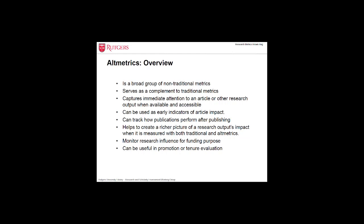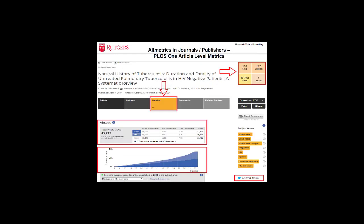Coupled with these developments are the emergence of several altmetrics tracking tools. As mentioned earlier, altmetrics are alternative — they are not replacing the traditional metrics. Together with traditional bibliometrics, altmetrics help to provide a richer picture of an article or other research output's impact. Compared to traditional metrics, altmetrics capture immediate attention to an article or other research output when available and accessible. Altmetrics can be used as early indicators of an article's impact, to track how publications perform after publishing, to monitor research influence for funding purposes, and can be used in promotion or tenure evaluation.